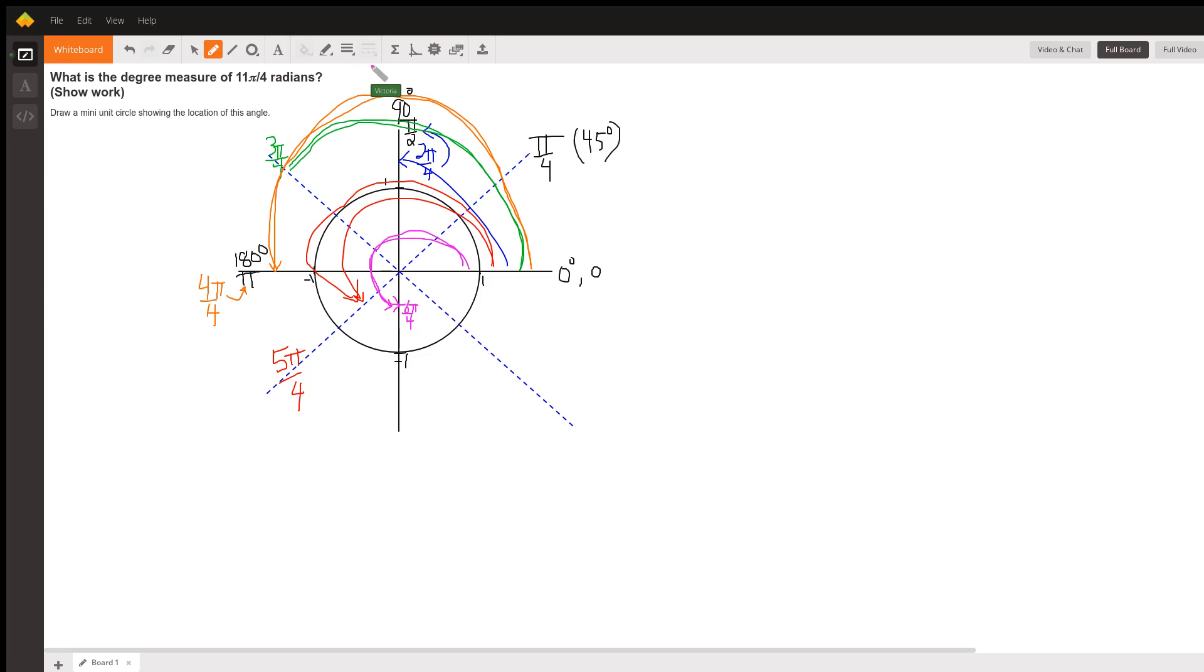But that simplifies to 3π/2, which we know is the angle here, or 270 degrees. Then I keep going around another π/4. So if I start at 0 and go around until I get to this one, I have gone 1, 2, 3, 4, 5, 6, 7π/4.